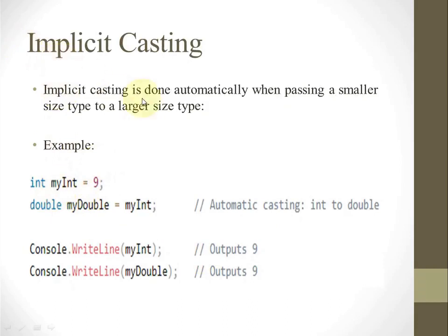Here is an example converting a smaller size to a larger data type. We declared a variable of integer type initialized with 9, and also declared a variable of double type and assigned it the integer variable. This means we are implicitly converting one data type to another — automatic casting of int into double. When we print the integer variable it will print 9, and when we print the double variable it will also print 9. There is no difference in values, but the size of these two variables must be different. This is how implicit casting is achieved.